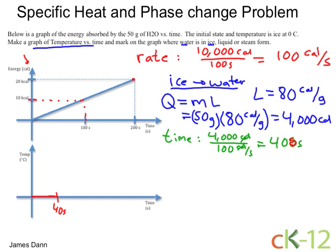Now after 40 seconds, it'll start to climb. Let's figure out what happens next. What happens next is that the temperature will go from zero degrees to 100 degrees. It'll heat up the water. And for that, we use the formula Q equals mc delta T.